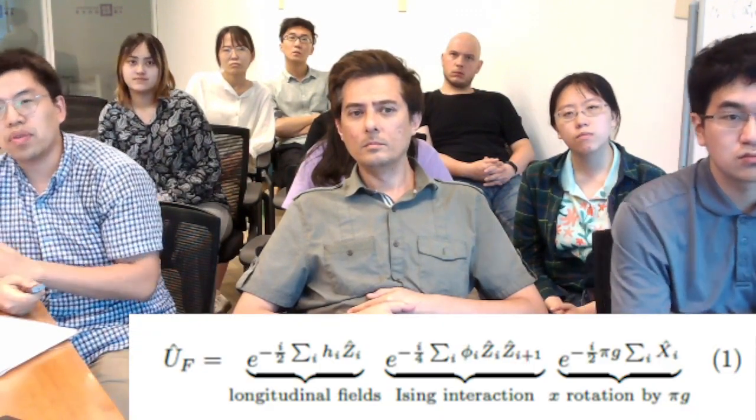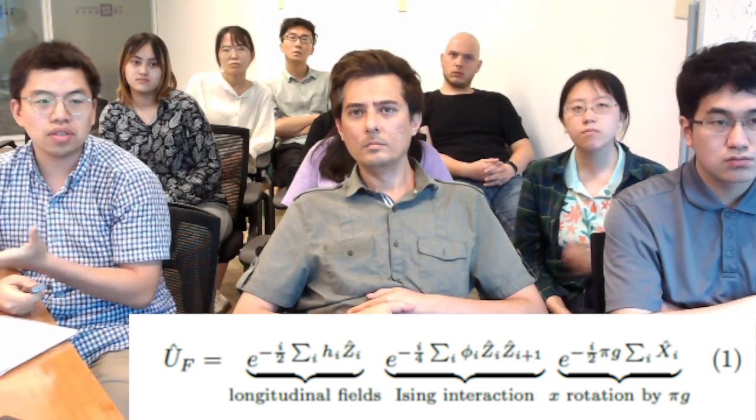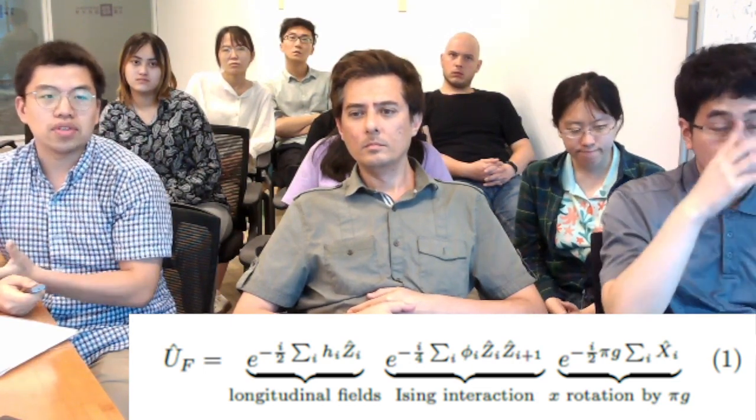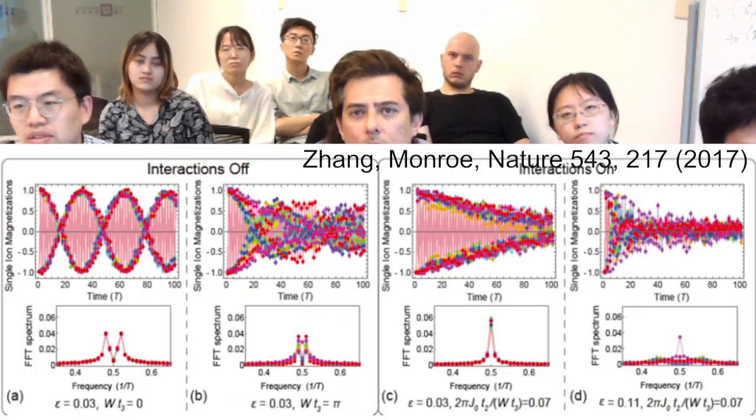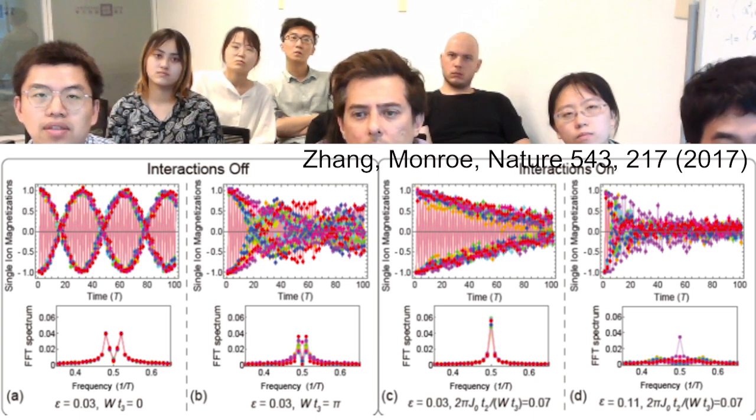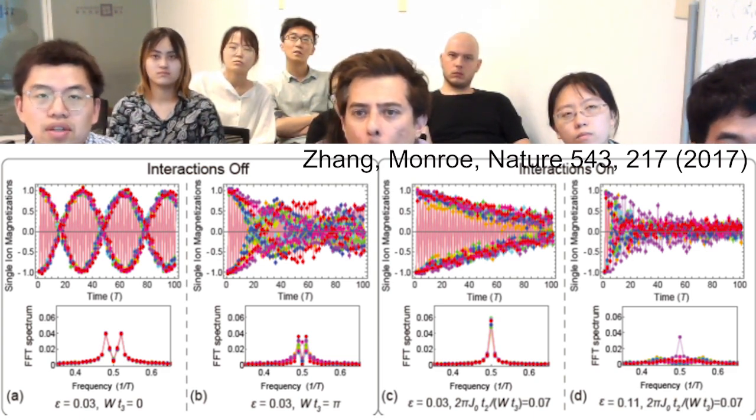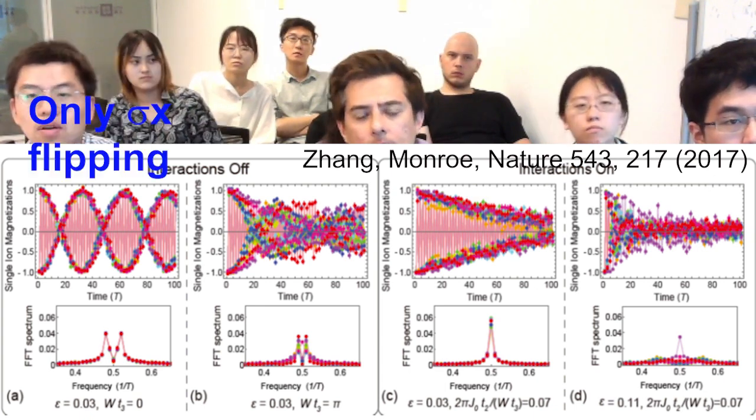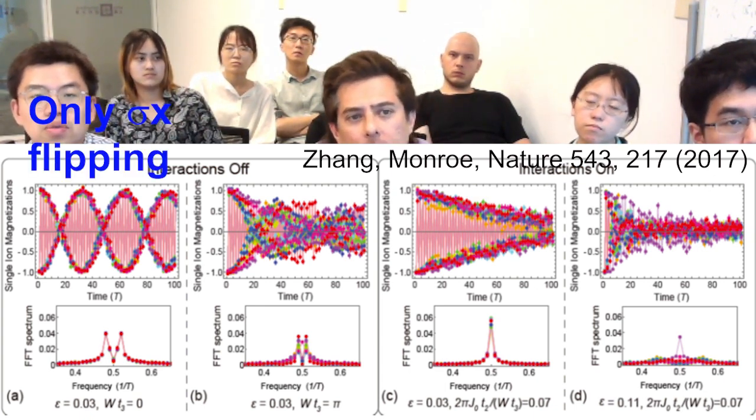The other important thing is you see that there are three steps, right? One is rotation, one is interaction, and then you have disorder. So these two graphs are from the 2017 paper, and this will show the importance of the interactions. For example, on graph A, the rotation is on.